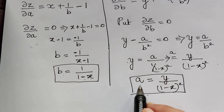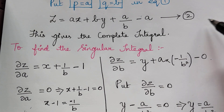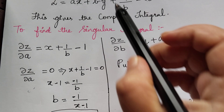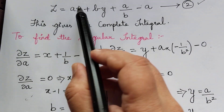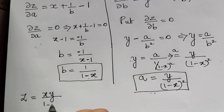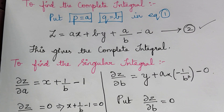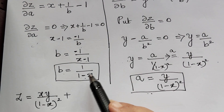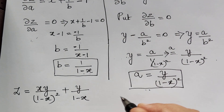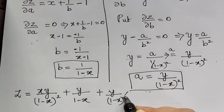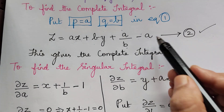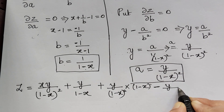Now we substitute the values of a and b into the complete integral, equation 2. So z equals ax plus by plus a by b minus a. Substituting a equal to y by 1 minus x whole square and b equal to 1 by 1 minus x: the first term gives xy divided by 1 minus x whole square, the second term gives y by 1 minus x, the third term a by b gives y by 1 minus x, and the last term minus a gives minus y by 1 minus x whole square.